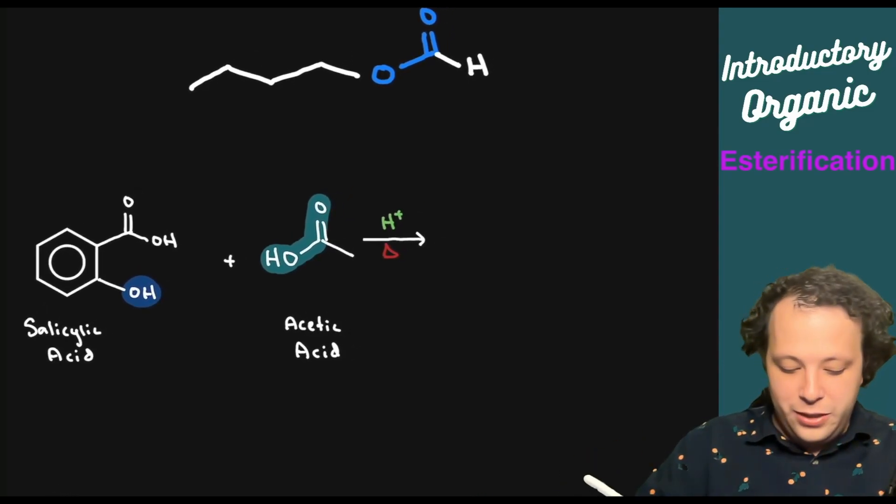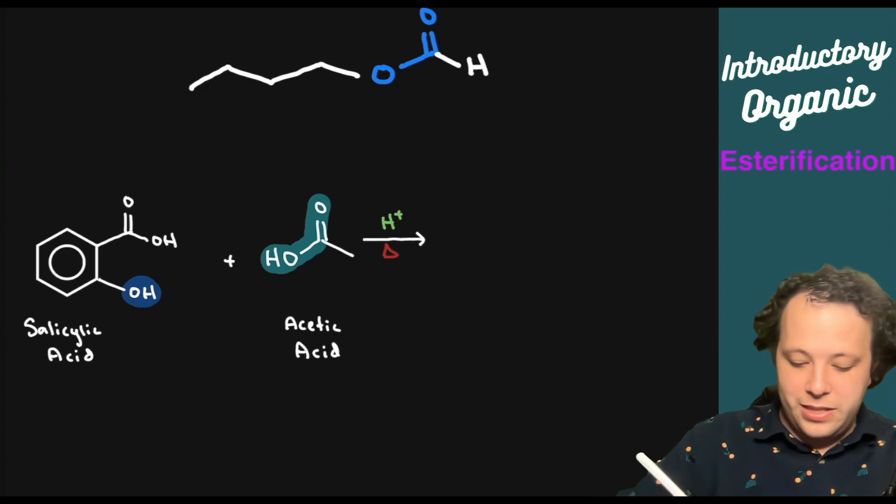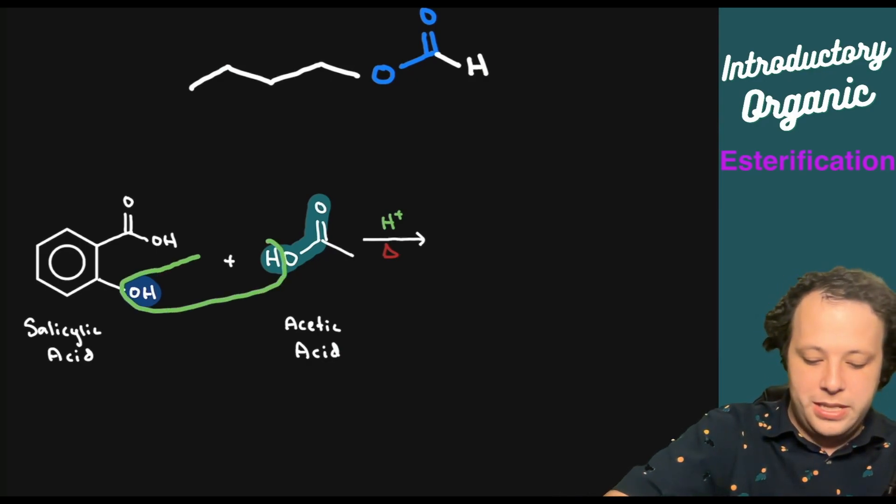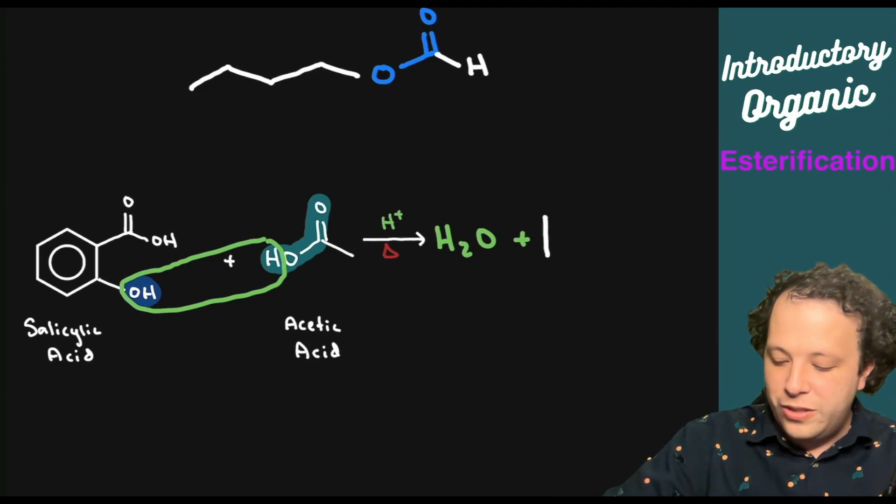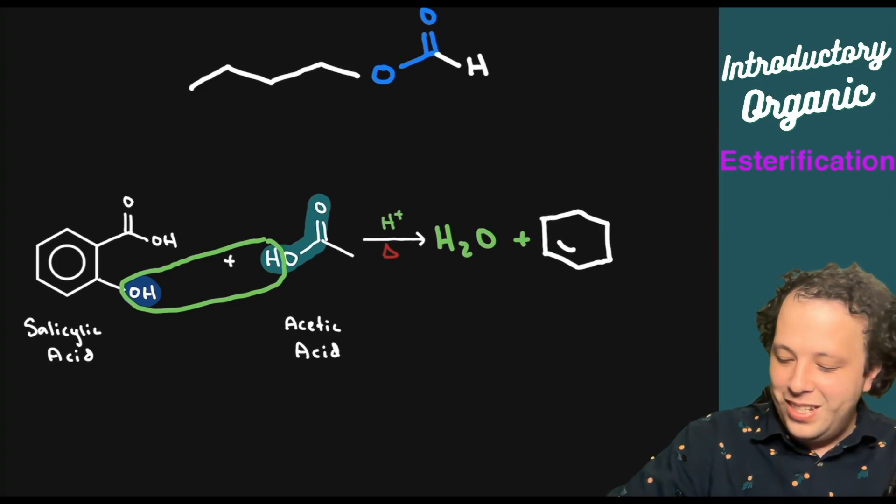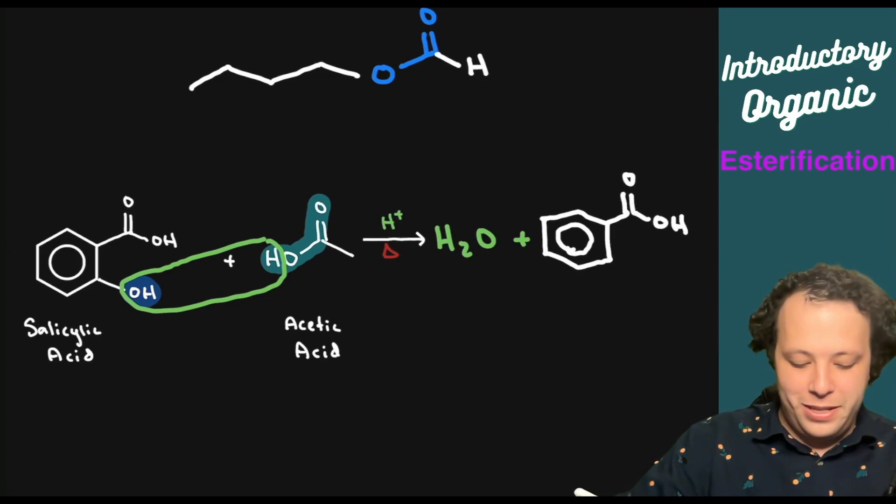So we are going to be removing the water component. So when these two things come together, we're going to be taking out the H2O. So just these pieces here. Now when H2O comes off, we are going to be making a new structure. So we'll redraw our ring. I like how it goes from a hexagon to a circle.